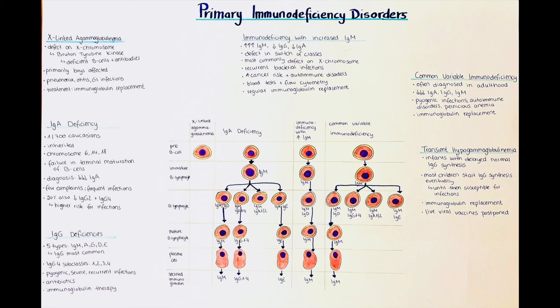In severe cases, immunoglobulin replacement therapy can be given. According to the Immune Deficiency Foundation, live viral vaccines such as those against measles, mumps, rubella, varicella, and rotavirus should be postponed until the pediatric patient has sufficient intrinsic production of IgGs.